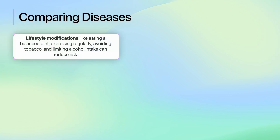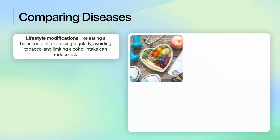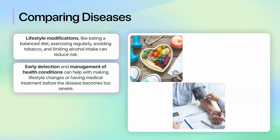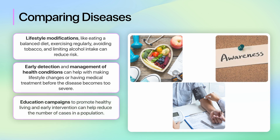For non-communicable diseases, lifestyle modifications like eating a balanced diet, exercising regularly, avoiding tobacco and limiting alcohol intake can reduce risk. Early detection and management of health conditions can help with making lifestyle changes or having medical treatment before the disease becomes too severe. Education campaigns to promote healthy living and early intervention can help reduce the number of cases of disease in a population.